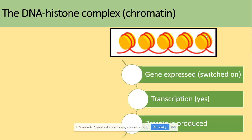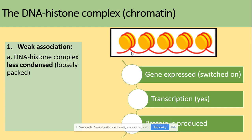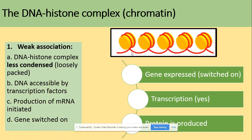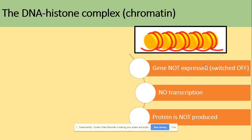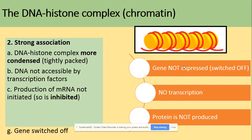The DNA-histone complex can have two shapes. When less condensed, there is a weak association between DNA and histones, so the DNA can be used for transcription — we produce mRNA and then our protein, meaning the gene is turned on. In contrast, when DNA is wrapped tightly around histones, the gene is not expressed, transcription and translation cannot take place, and production of mRNA is inhibited — the gene is turned off.